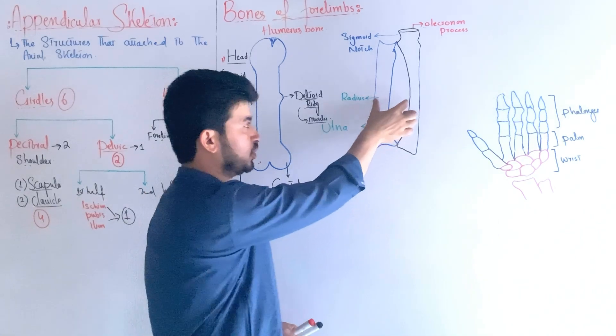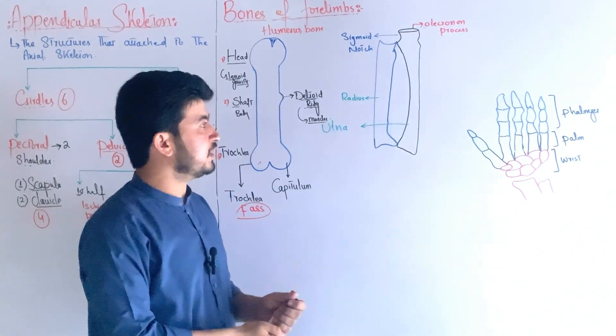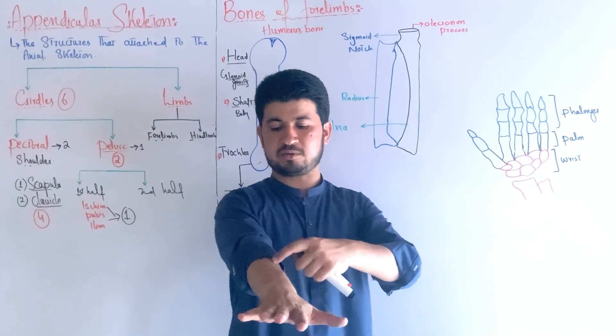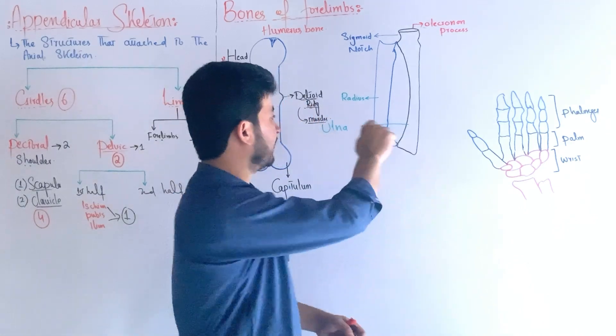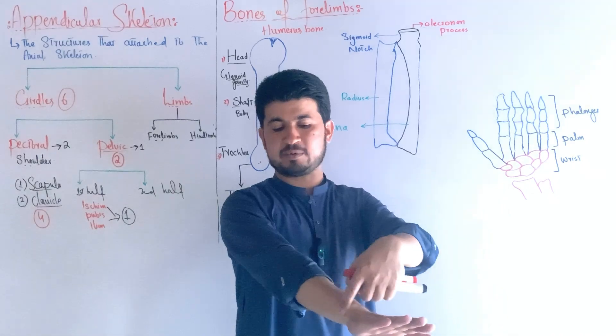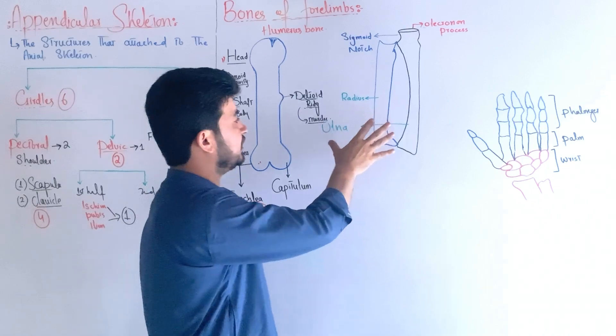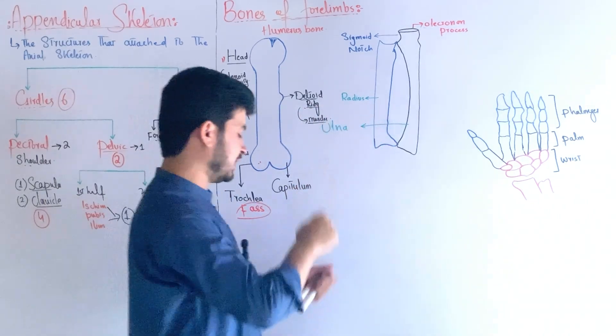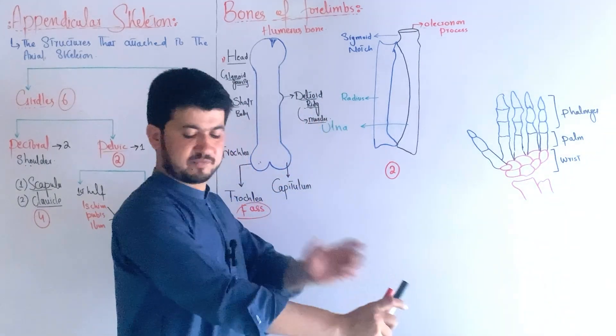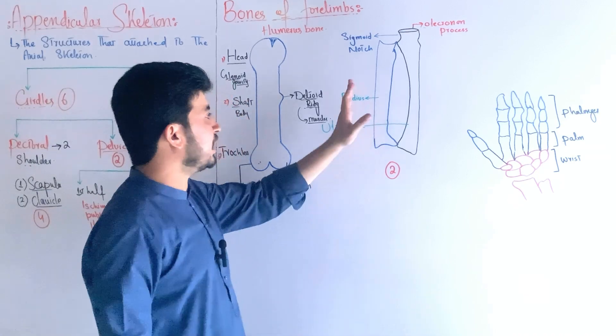The middle part has two bones - the radius and ulna. These are the two bones of the forearm. The radius is on one side and the ulna on the other. The middle part has these two bones.